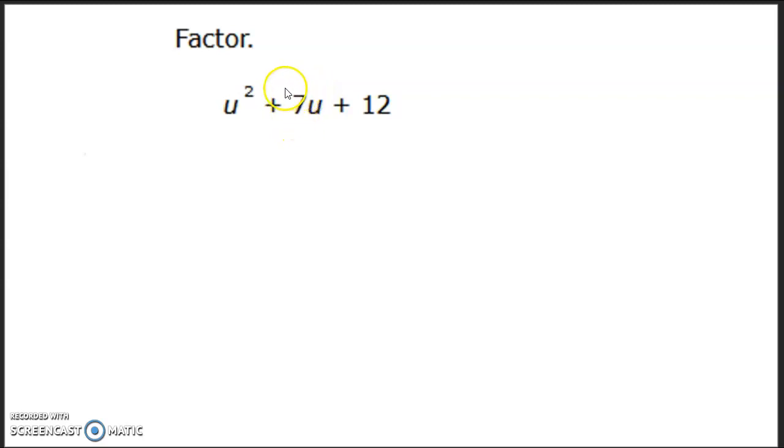So the first thing we need to do is there's this number in the middle and then there's this number at the end. Okay, so these two important numbers. We need to find two numbers, I'm gonna make a little t-chart, we need to find two numbers that add to be your middle number and multiply to be your back number. Okay, that's we need two numbers that do that.